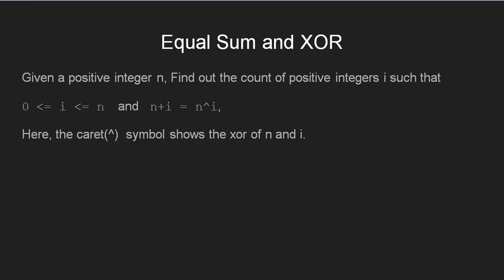The problem says that given a positive integer n, we are to find out the count of numbers less than or equal to n such that n plus i equals n caret i. The caret symbol shows the XOR operation between n and i.